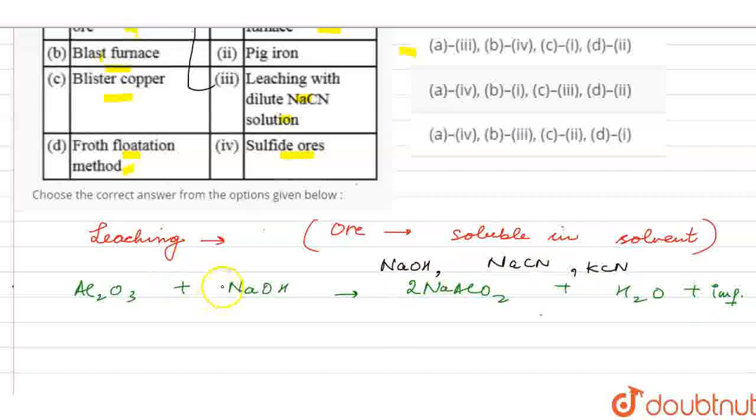So, if I talk about this, and if I talk about silver case, what is used in the case? NaCN, which produces Na[Ag(CN)2], twice, plus impurities. Okay? So, this is correct.